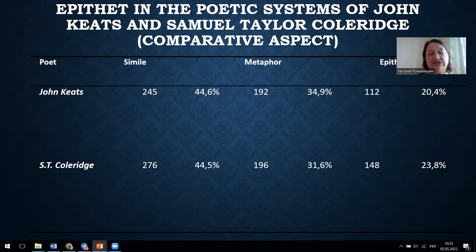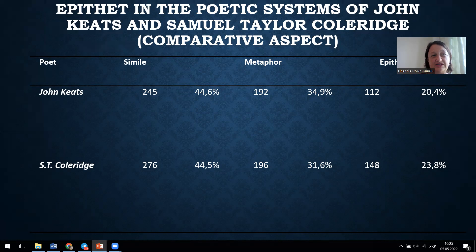Practically even distribution of similes in the texts of both authors manifests the productivity of imagery, world perception, and reflection of the object of artistic depiction on the ground of versatile associations and mental operations of simulation and comparison. In the same way, the absolute and relative frequency of metaphor was defined. The frequency ratio of basic tropes in the poetry of Keats and Coleridge is represented in the table on the slide.